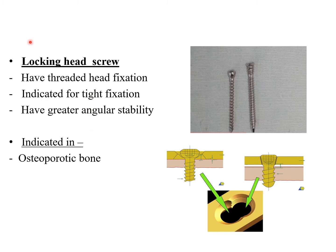The locking head screw has a threaded head, unlike a plain head screw. It is indicated for tight fixation with greater angular stability. It is particularly indicated in osteoporotic bone because the threaded head takes much of the tension, placing less stress on the bone itself.